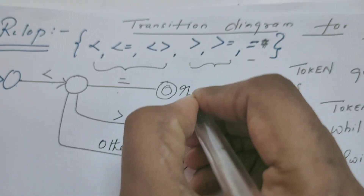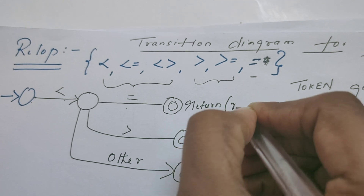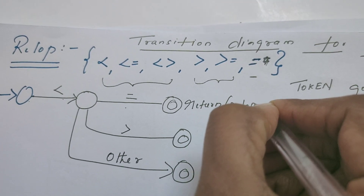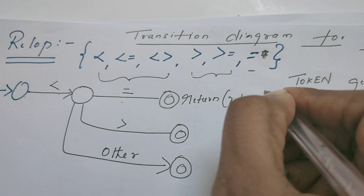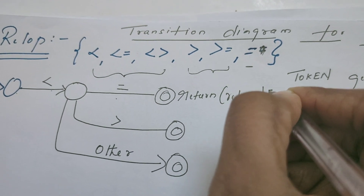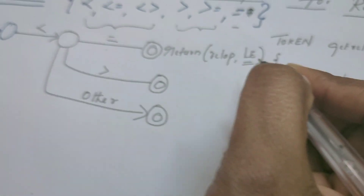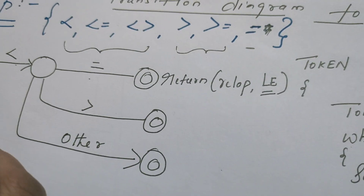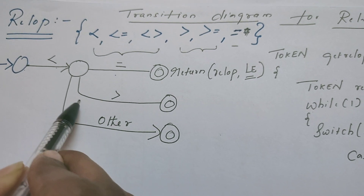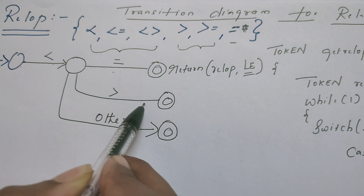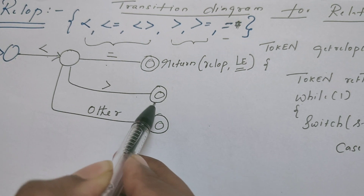...this state returns a token. The name of the token is relational operator and the value of this relational operator is less than or equal to, given by the symbol LE. From the start state, if this less than symbol is further followed by a greater than symbol, it enters into the next state. This is one of the final states.